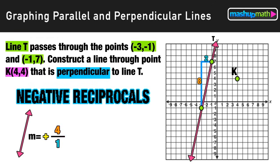Now again, the line we need to construct is going to be perpendicular, so we need a slope that's a negative reciprocal. So we'll take that four over one slope and we're going to flip it and switch the sign, so our new slope is negative one over four. So all we have to do now is take that slope and build off of point k by going down one unit and then over to the right four.